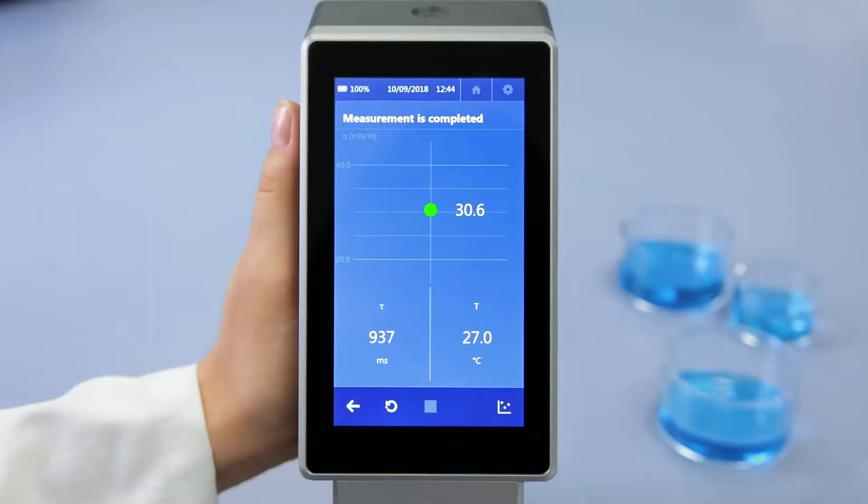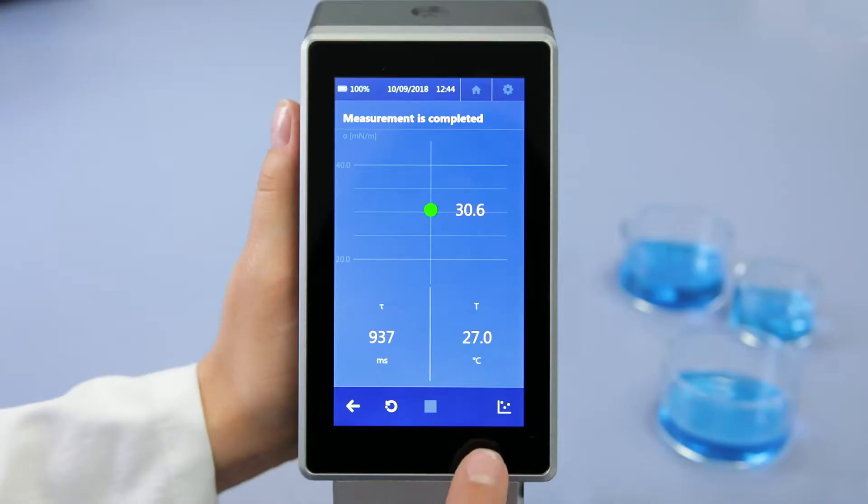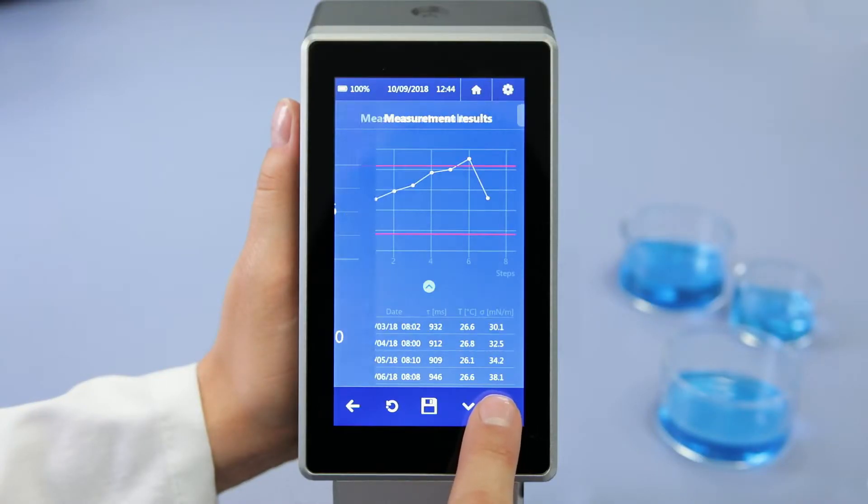As soon as the measurement is complete, you can see at a glance whether the measured value lies within the predefined quality range. The value can also be displayed graphically on a diagram, along with previous values, in order to illustrate the trend in the surfactant content.